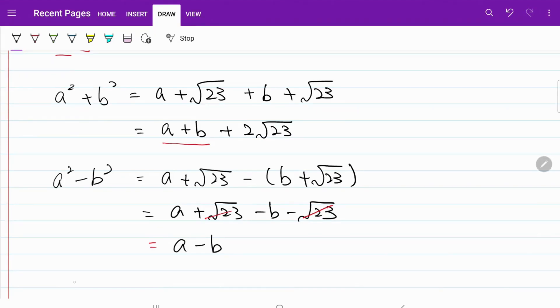We can now use the formula for a² - b², which is equal to (a + b)(a - b).